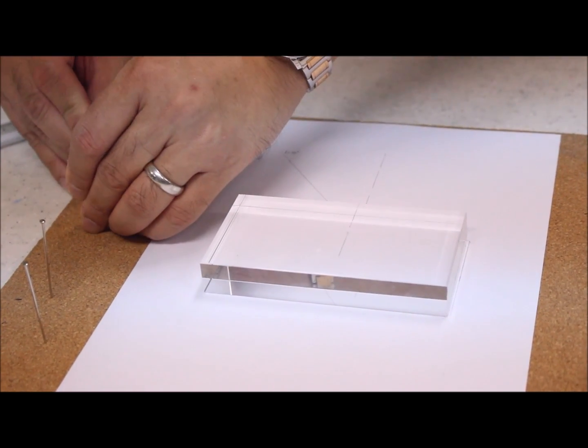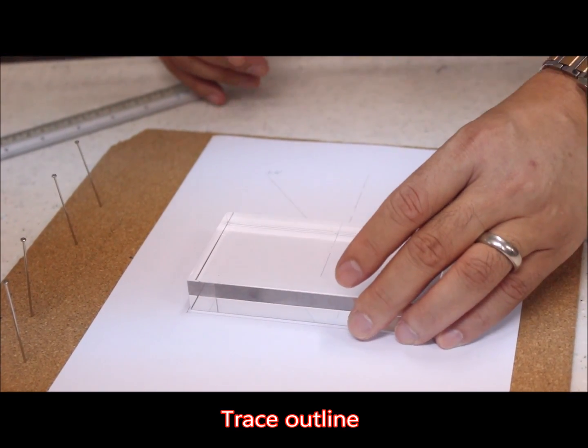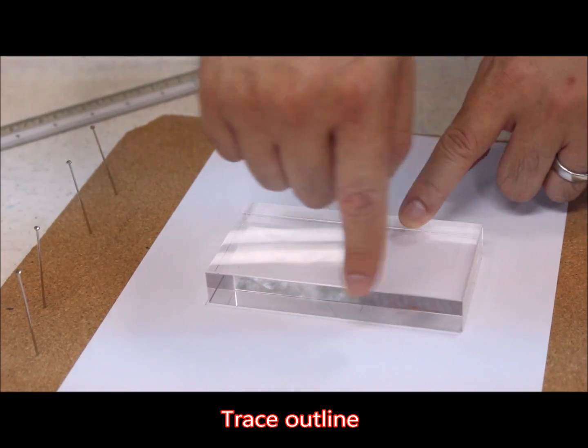First, place the glass block somewhere in the center of the paper and draw the outline.